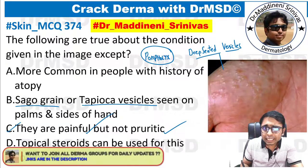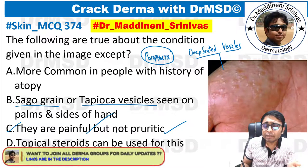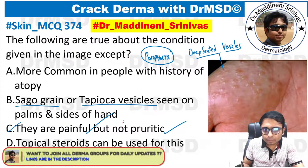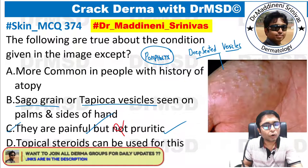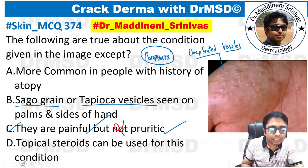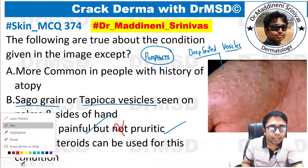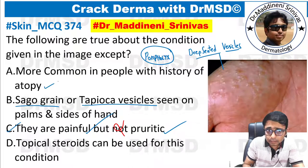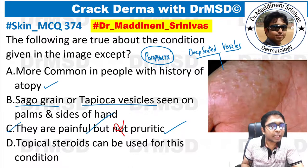Option C states they are painful but not pruritic — and this statement is wrong because of the word 'not.' That is why this is the answer in this question. The other option — more common in people with a history of atopy — is absolutely right.